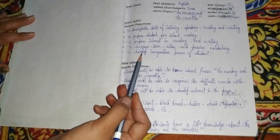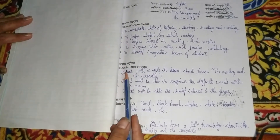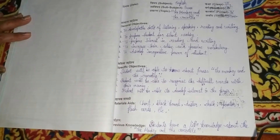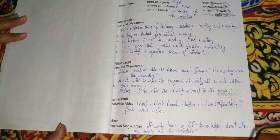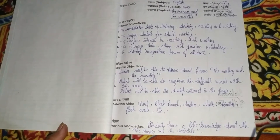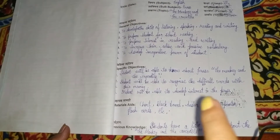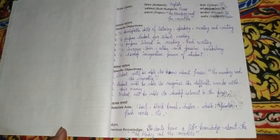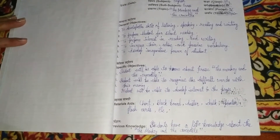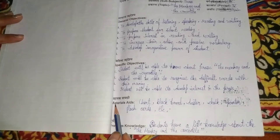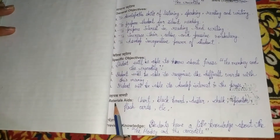General objectives will be the same for everyone. After that come specific objectives. In specific objectives, if you are teaching prose, comprehension, poetry, or any grammar topic — each will have different specific objectives. After that comes material aids — whatever teaching aids or materials you are using, you will note all of them down here.